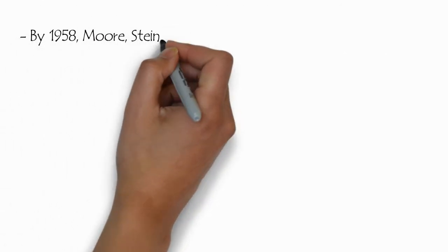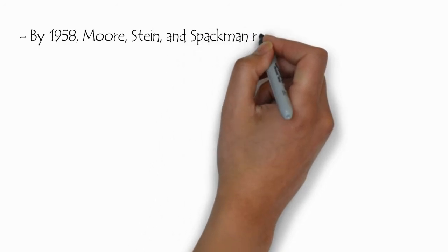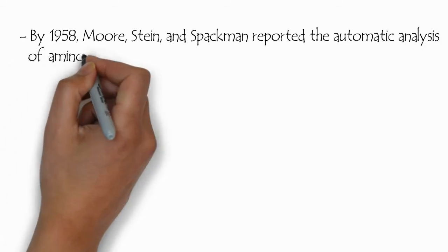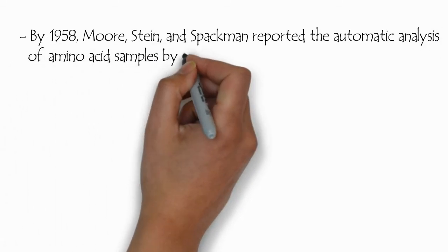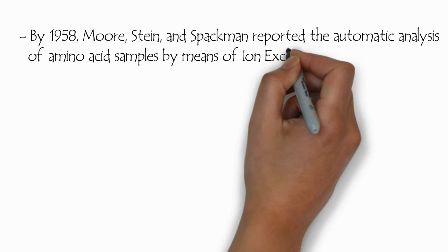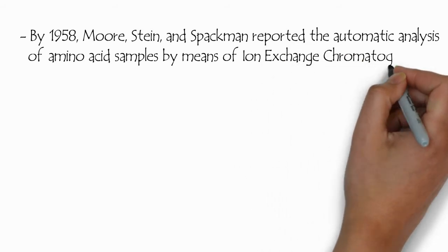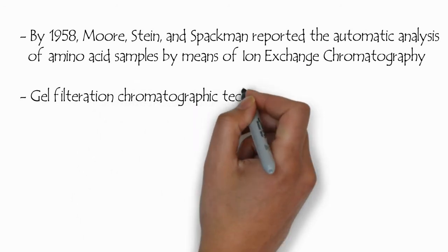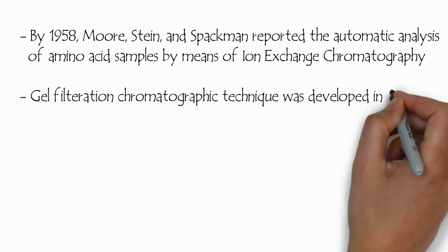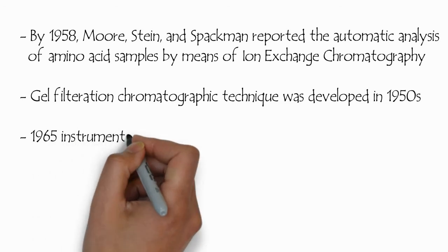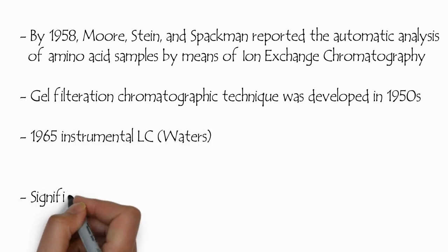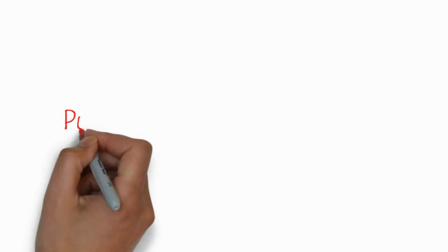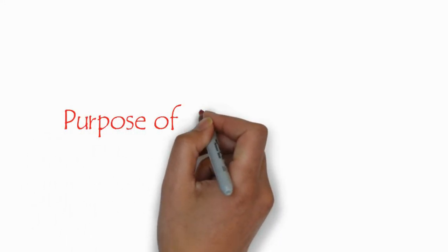In more detail, by 1958 Moorstein and Speckman reported automatic analysis of amino acid samples by means of ion exchange chromatography. Similarly, gel filtration chromatography technique was developed in the 1950s. In 1965, instrumental LC was developed by Waters, and significant development occurred later on.